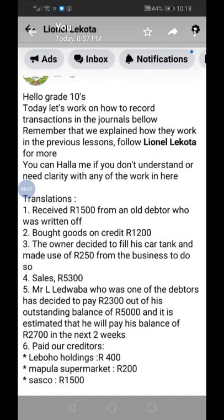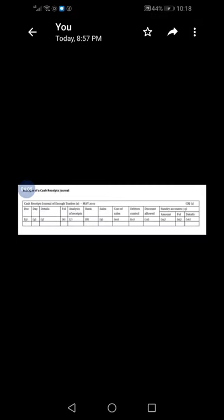Number six: paid our creditors — we also use the bank to pay creditors, including insurance for 2800. We pay for insurance for the business, not for any other business.